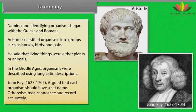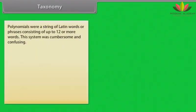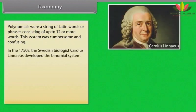John Ray (1627 to 1705) argued that each organism should have a set name, otherwise men cannot see and record accurately. Polynomials were a string of Latin words and phrases consisting of up to 12 or more words. This system was cumbersome and confusing.